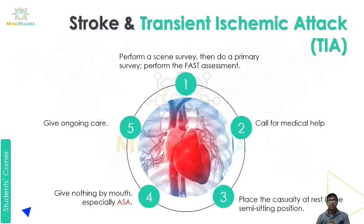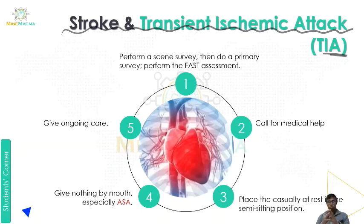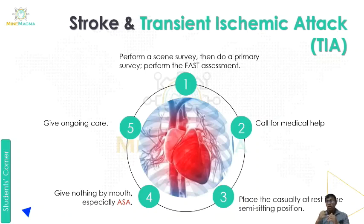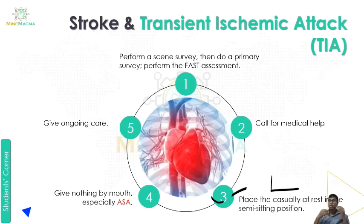Now we will see stroke and transient ischemic attack, TIA. First, perform a scene survey, then do a primary survey and perform the FAST assessment. Scene survey means we check that the area is safe. Primary survey means we assess and give first aid. Second, call for medical help. Third, place the casualty in a rest position, specifically a semi-sitting position — sitting supported against a wall in an L-shape.